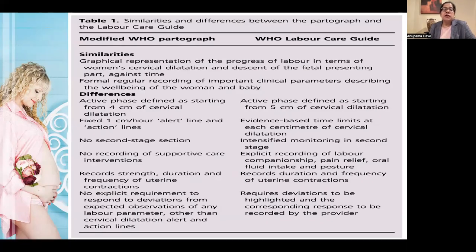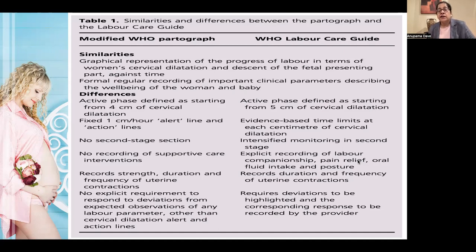Similarities include graphical representation of progress of labor — cervical dilatation and descent against time — and regular recording of important clinical parameters for the well-being of woman and baby. Key differences: active phase is defined from 4 cm in the old partograph but from 5 cm in the labor care guide. The old guide used a fixed 1 cm per hour alert line with alert and action lines, while the newer guide uses evidence-based time limits at each centimeter of cervical dilatation. The old guide had no second stage section, while the new one includes intensified monitoring in the second stage, which is critical for preventing maternal and neonatal morbidity.